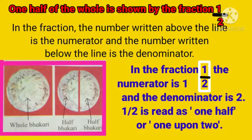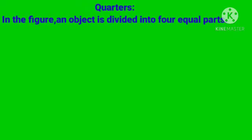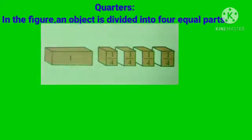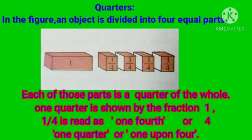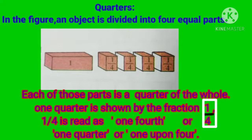Now, next about quarters. In the figure, an object is divided into four equal parts — you can see in the picture, one object is divided into four equal parts. Each of those parts is a quarter of the whole. One quarter is shown by the Fraction 1 upon 4. One upon 4 is read as one fourth, or one quarter, or one upon four.